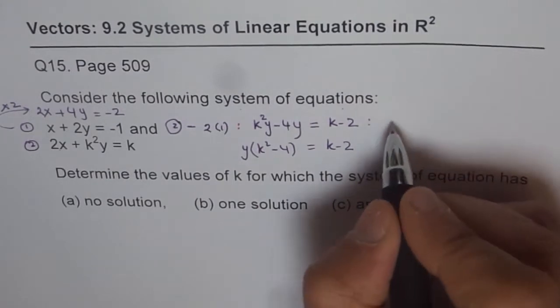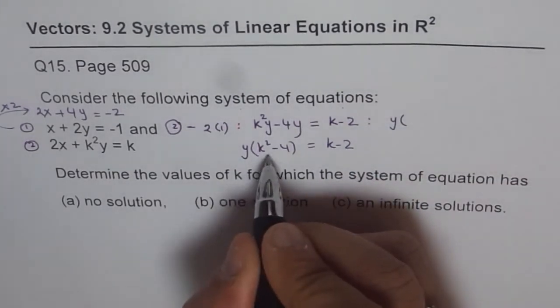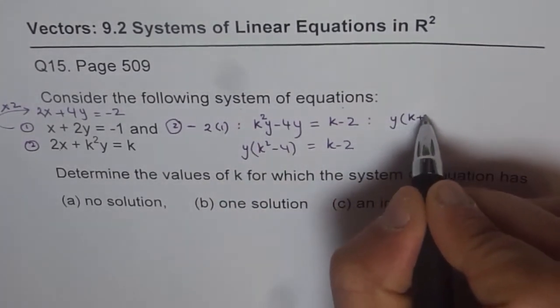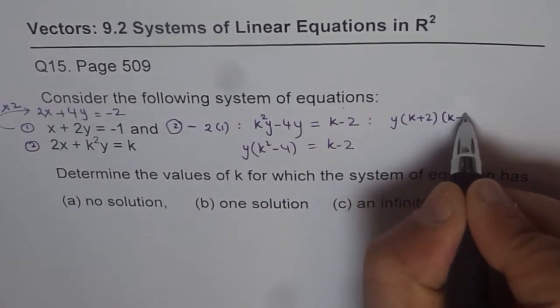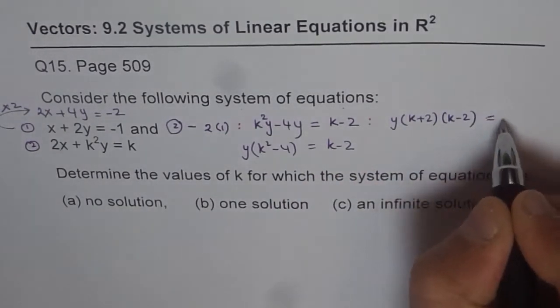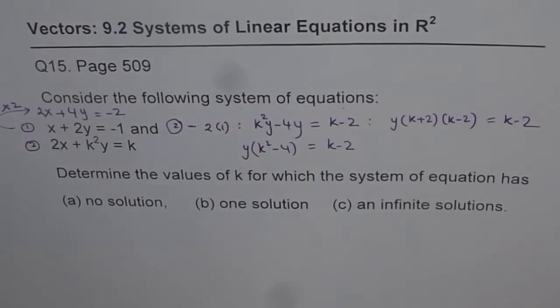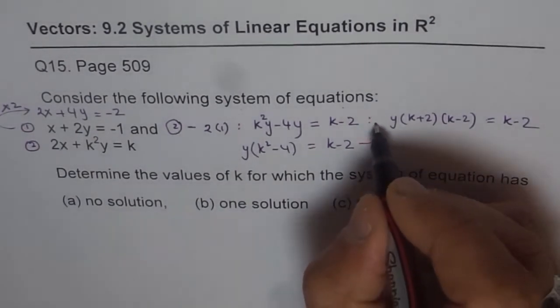So now from here, we're getting y times k square minus 4 can be written as k plus 2 times k minus 2, and we have equals to k minus 2 on the right side. Do you see that? Now, that is what we have. So we move from here to this place.